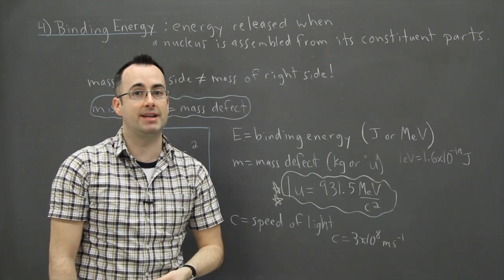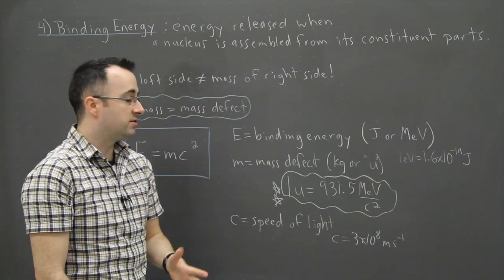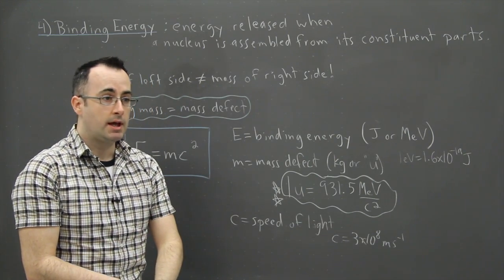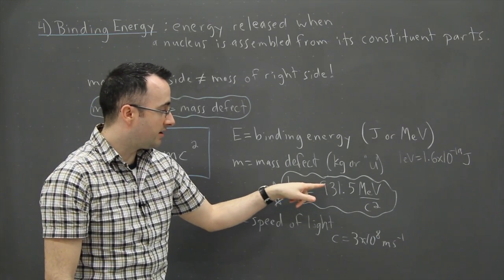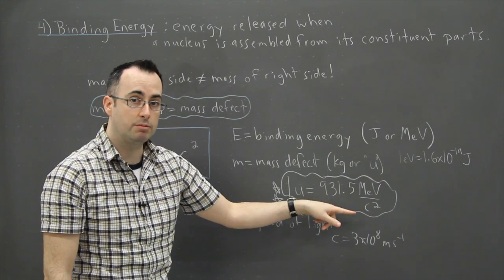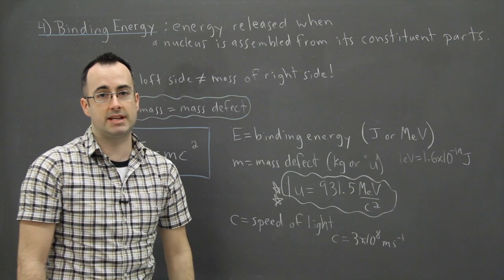So the next video I'm going to show you an example where we actually work with this. You'll see how straightforward it is and how this unit of U equals 931.5 MeV per C squared really comes to save the day.